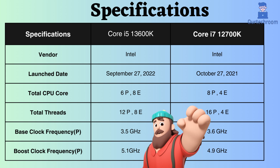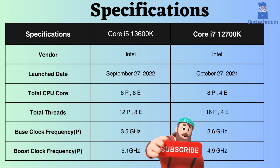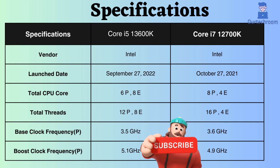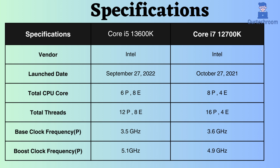In terms of clock frequencies, the base clock for the Core i5-13600K performance core is 3.5 GHz, slightly lower than the Core i7-12700K at 3.6 GHz. However, the boost clock frequency for the Core i5-13600K performance core is higher at 5.1 GHz, compared to the Core i7-12700K at 4.9 GHz. This higher boost frequency enables the Core i5-13600K to perform better under heavy CPU loads.